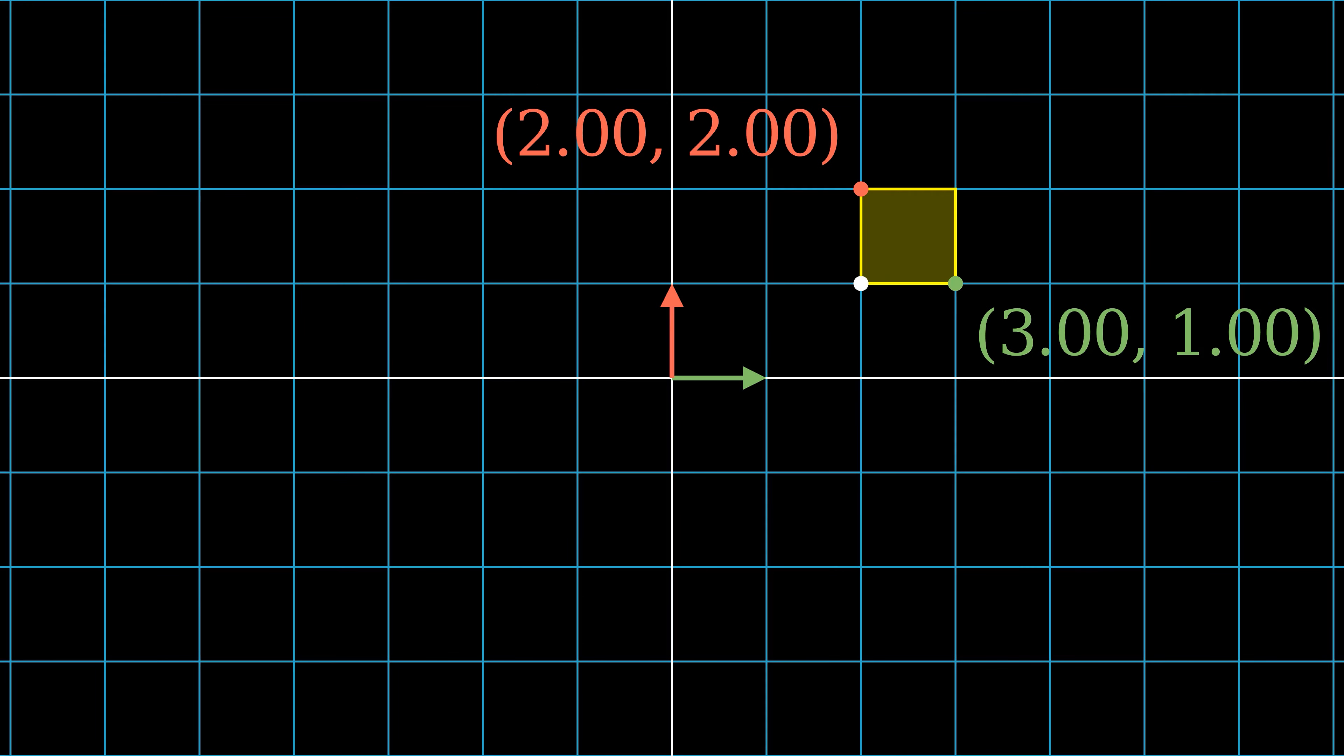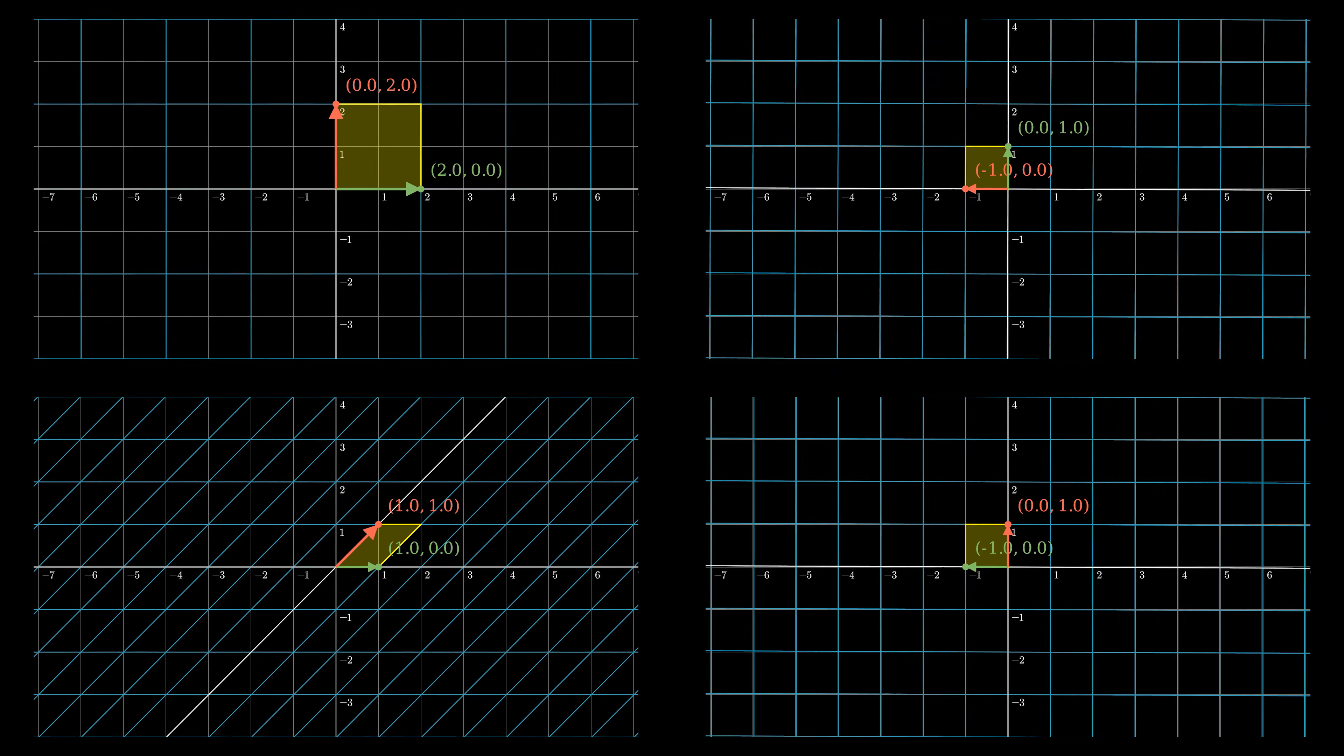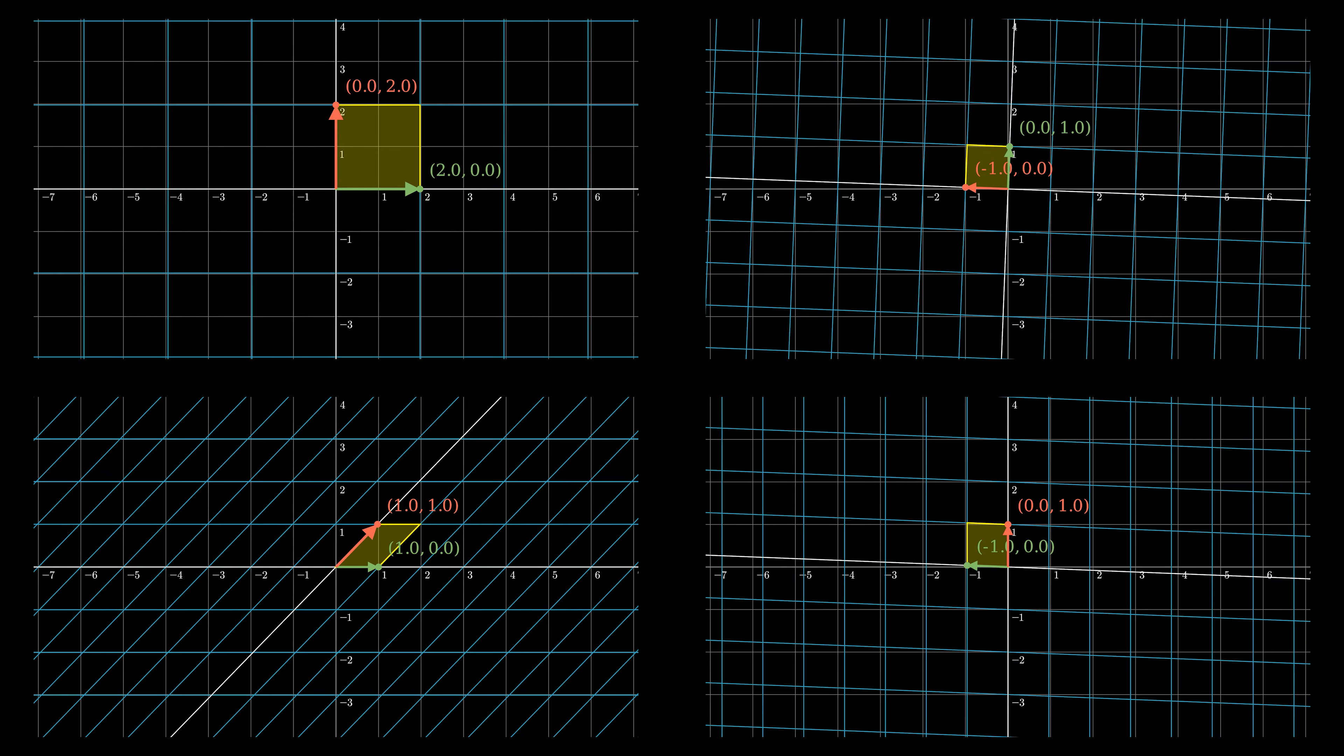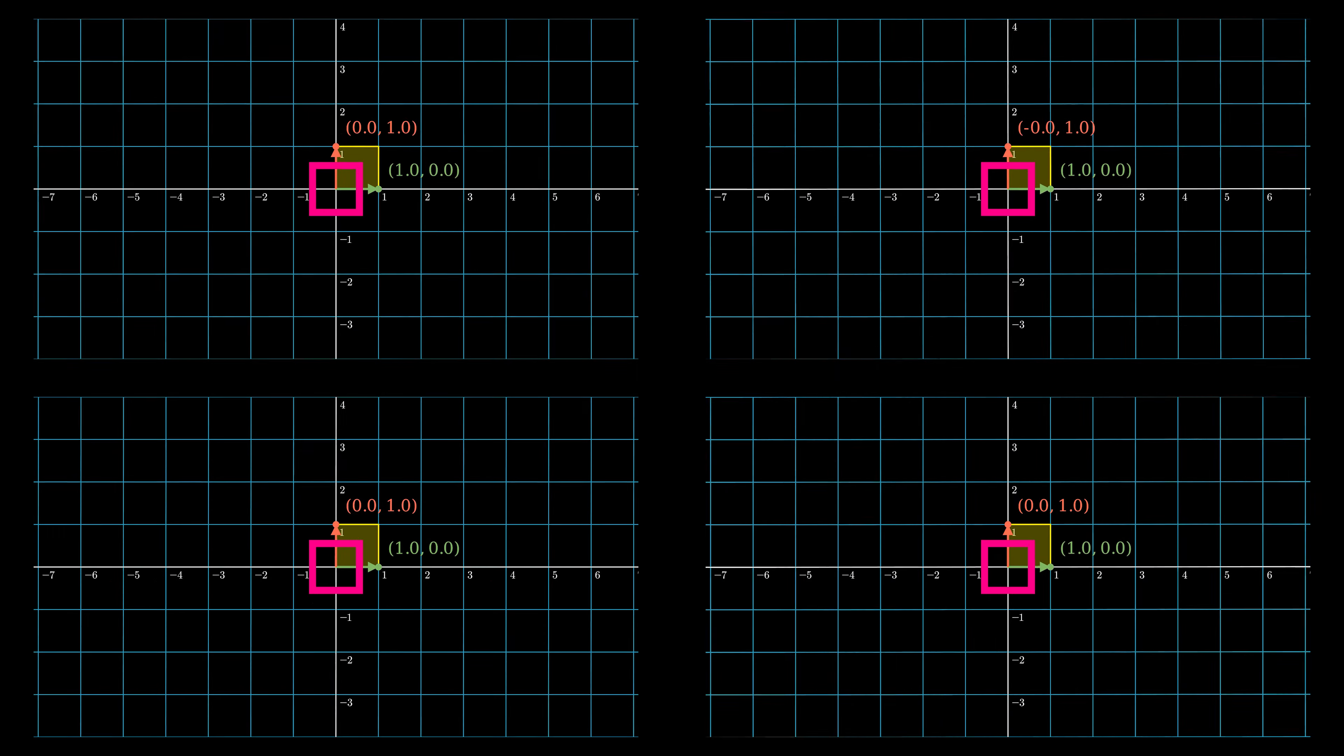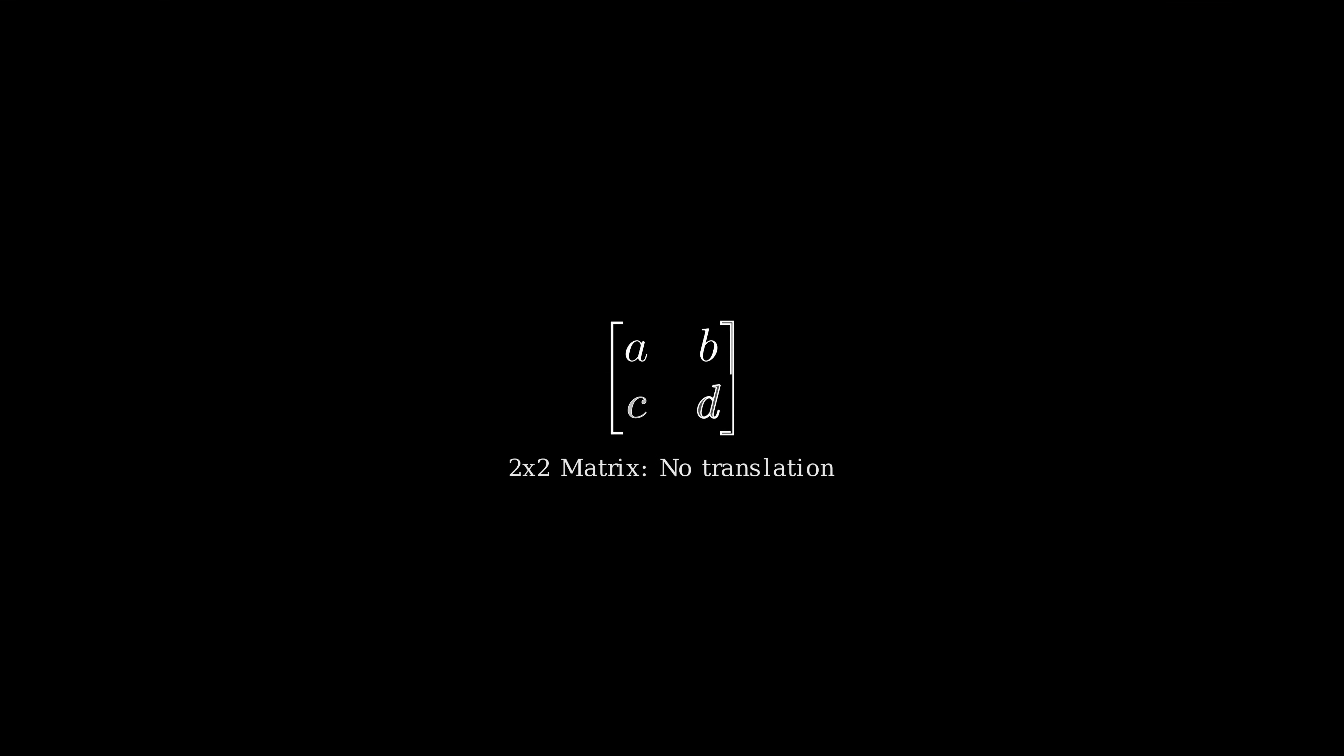Now let's get back to the question in the beginning: where is the translation? Notice the four matrices we talked about today—no matter how they are transformed, the origin stays still. But the translation works more like a vector addition. Could it also be expressed in a transformation matrix? The answer to this is homogeneous coordinates.